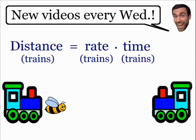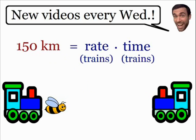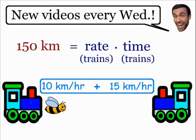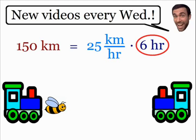First we're going to use this formula only for the trains to find the time it takes for them to collide. The distance between the trains is 150 kilometers, so we plug 150 into the distance part of our equation. One train travels at 10 km/h and the other at 15 km/h; adding these gives a relative speed of 25 kilometers per hour. Plugging that in, the time works out to 6 hours, since 25 times 6 equals 150.